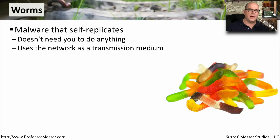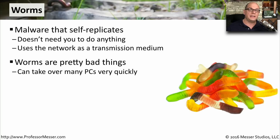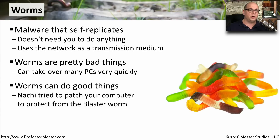A worm is a type of malware that's able to replicate itself from system to system, but it doesn't need you to run a particular program. In fact, it doesn't need a human at all — it simply self-replicates across many different computers. This is obviously a very bad piece of malicious software. When you have software that's able to replicate itself very quickly to many systems simultaneously, it can be a significant security concern. Most of the worms you'll run into are performing some type of malicious function on your computer, but there have been worms in the past that have tried to mitigate or fix problems that were created by other worms.